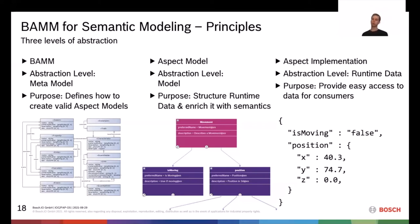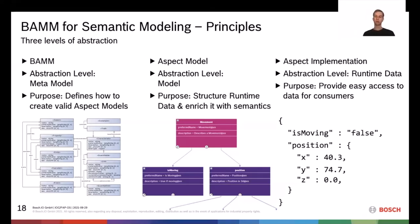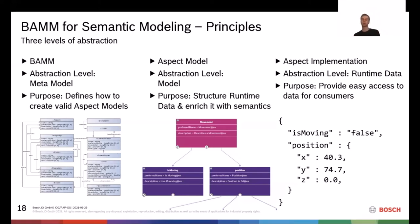A cool thing about BAMM is it allows you to move domain knowledge out of the application and into the model. For example, if you're implementing a UI for edge device data, you know from domain expertise that a temperature value is between 0 and 25 degrees Celsius representing a room temperature. By modeling this with BAMM, software can extract this information and automatically build the UI — for instance setting the Y axis from 0 to 25 and labeling it correctly.